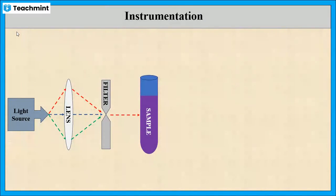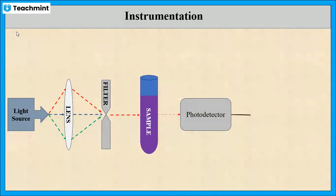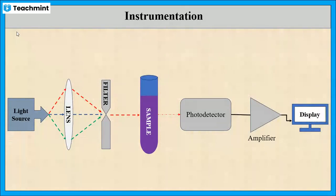The colored sample absorbs a certain quantity of light based on its concentration and emits the remaining light, so the intensity of light decreases after passing through the sample. The emitted light reaches the photodetector, where it is amplified and displayed on the display.